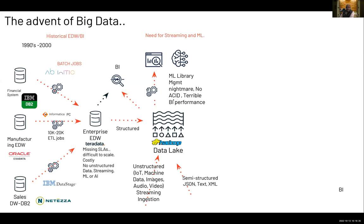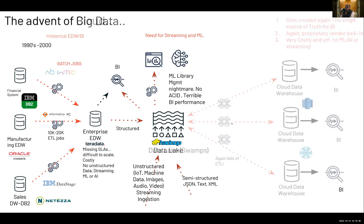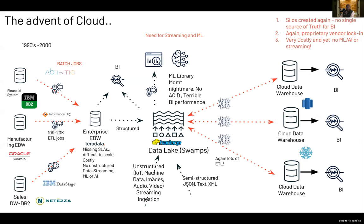Even Hadoop had problems — it couldn't do ACID compliance and had terrible BI performance. Hadoop is actually dead. When the Databricks founders created Apache Spark, it was 100 times faster than Hadoop. Spark became the de facto standard, but open source Spark was still a data lake technology. Because of all these issues, people started moving to cloud data warehouses. At least you can scale in the cloud — there was some separation of compute and storage. Scalability was solved, but if you're just doing cloud data warehousing, you're still going back to the 80s architecture — you cannot do ML, AI, or streaming. You still have a very siloed stack in terms of your platform.